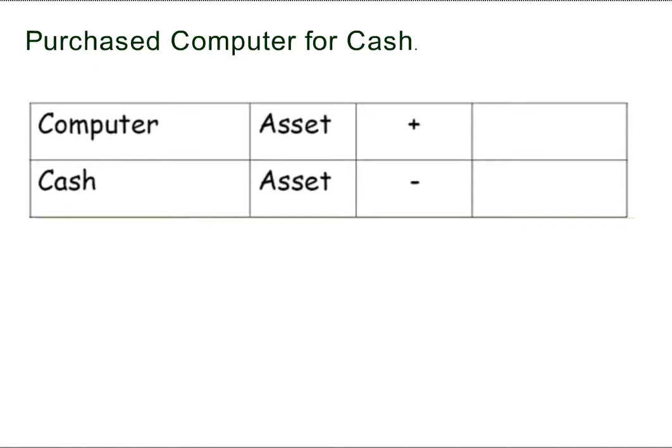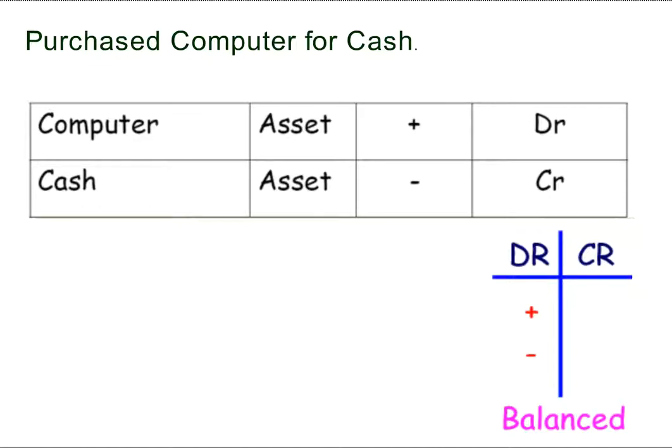Are the accounts increasing or decreasing? Computer is increasing because you purchased it. Cash is decreasing because you used that to purchase the computer. Assets increase on the debit side and decrease on the credit side.